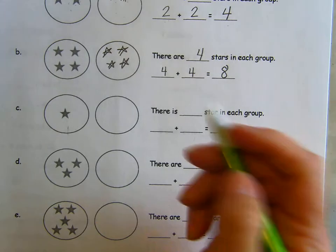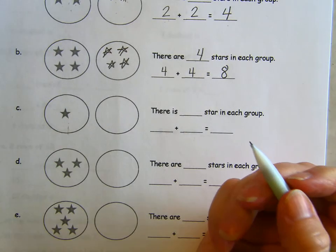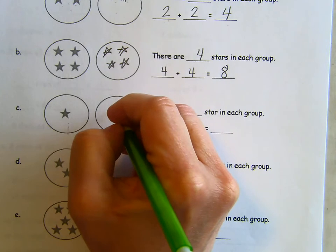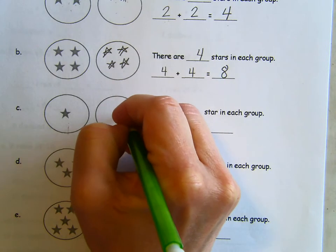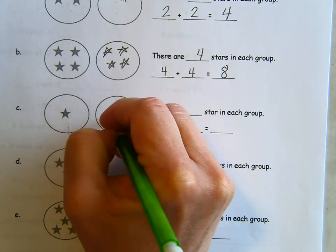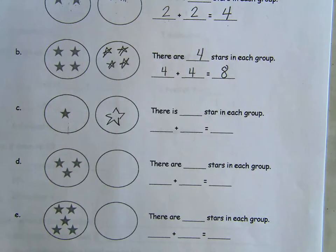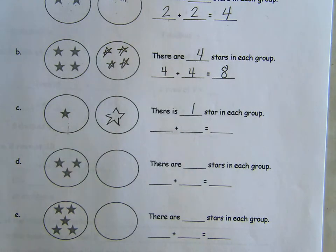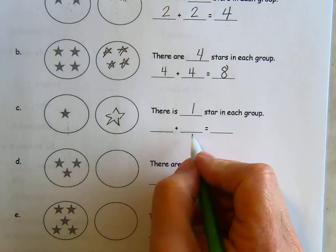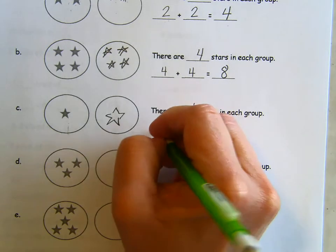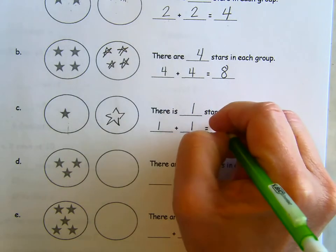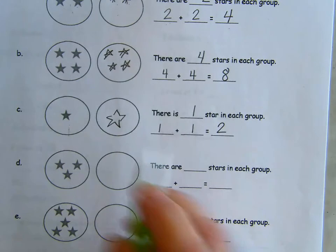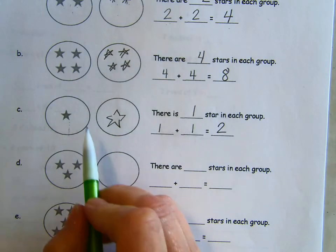Here, oh my gosh, super easy. Only one. There is one star in each group. So what is that doubles fact? One plus one equals two. We had one and we doubled it. Now we have two.